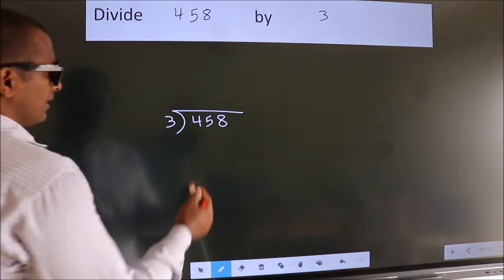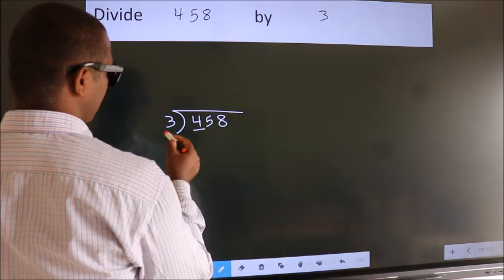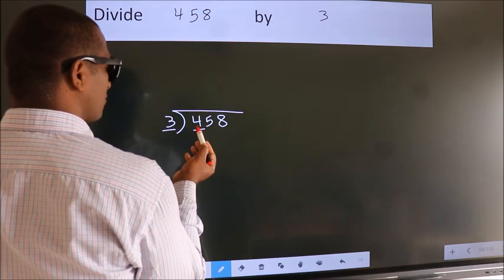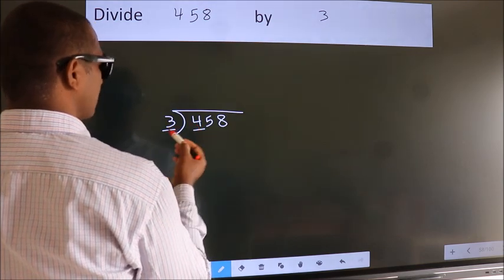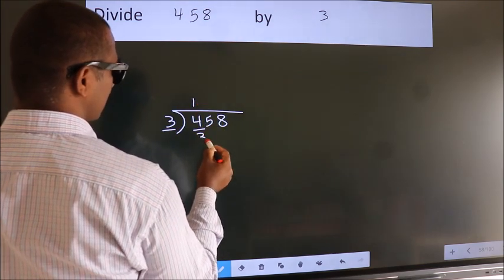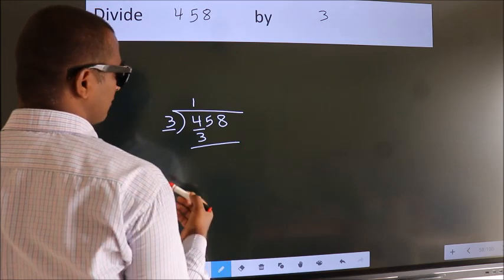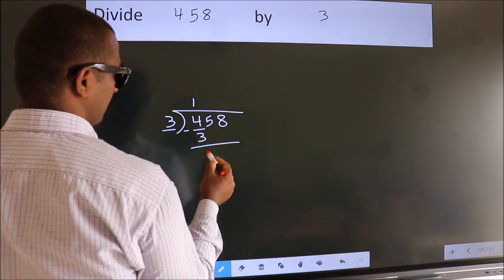Next. Here we have 4, here 3. A number close to 4 in 3 table is 3 once 3. Now we should subtract. We get 1.